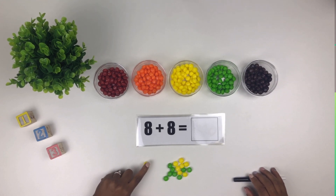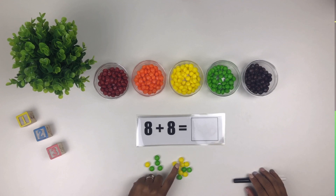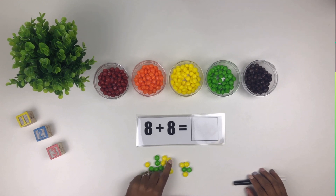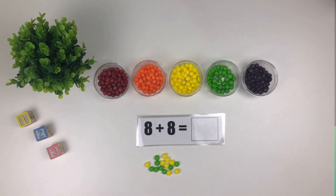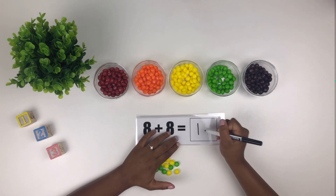One, two, three, four, five, six, seven, eight, nine, ten, eleven, twelve, thirteen, fourteen, fifteen, sixteen. So eight plus eight equals sixteen.